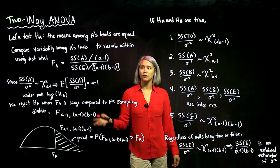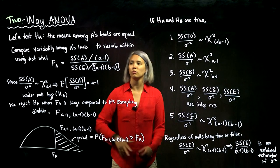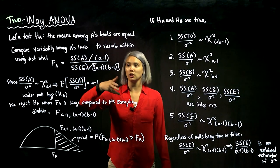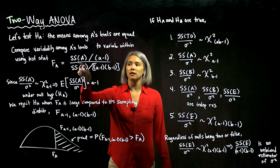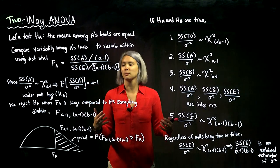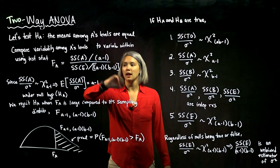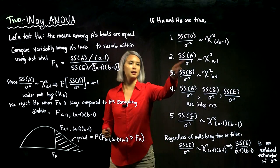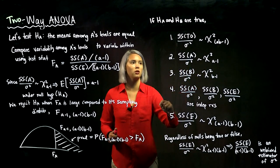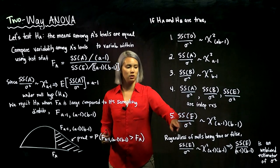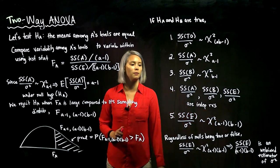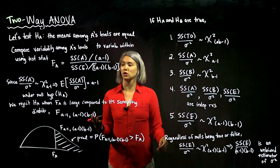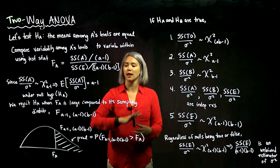If the null hypothesis were actually true, this test statistic should be pretty small, or maybe about one. But if the means are actually different, SSA is going to be bigger than expected. So we compare this statistic against its sampling distribution. We know SSA over sigma squared is chi-squared with A minus 1 degrees of freedom, and SSE over sigma squared is chi-squared with (A-1)(B-1) degrees of freedom. Therefore, this ratio is going to have an F distribution.